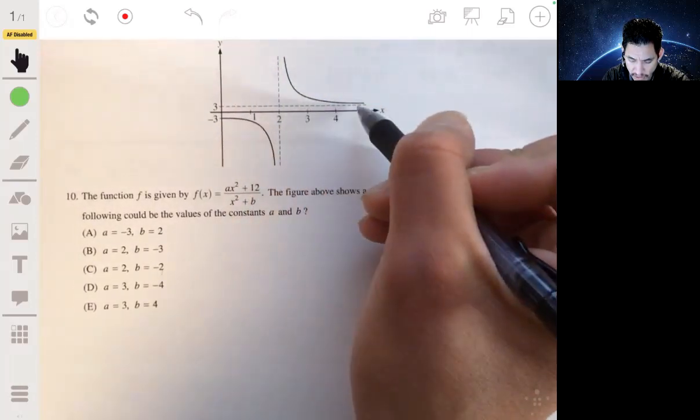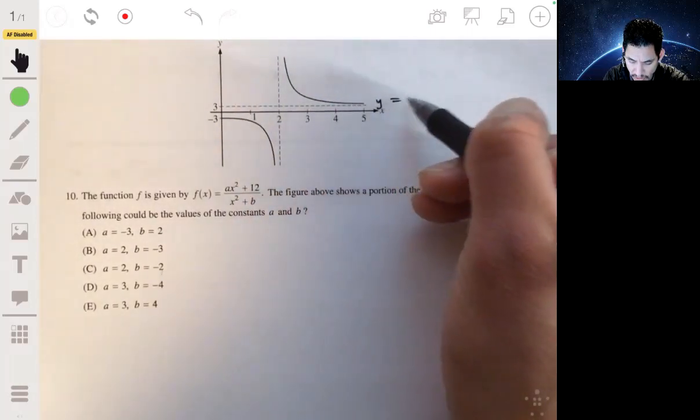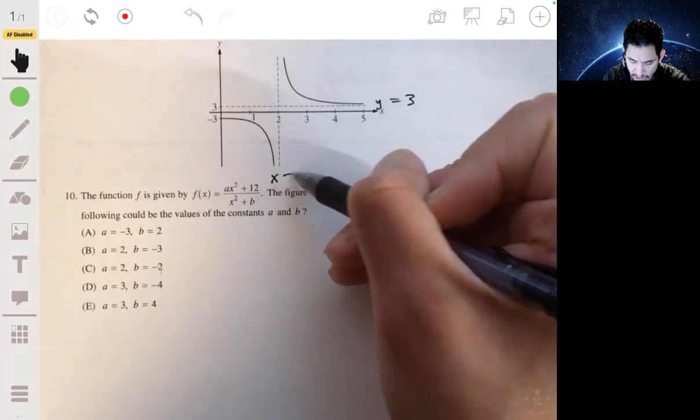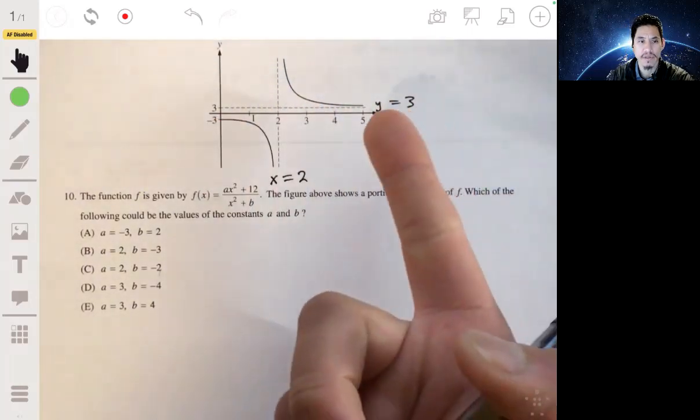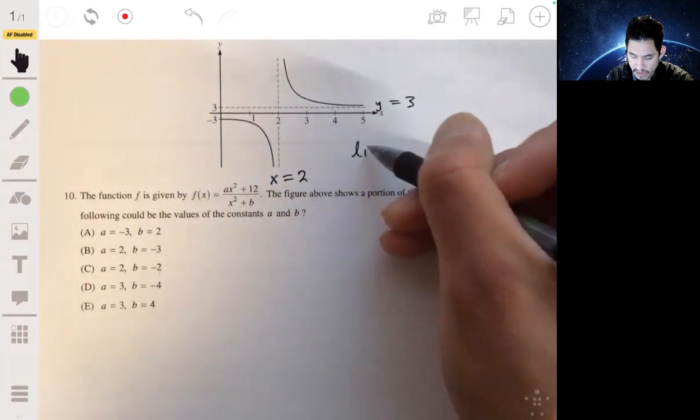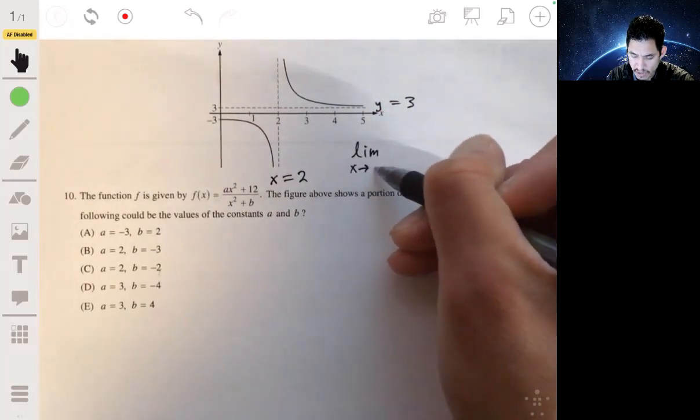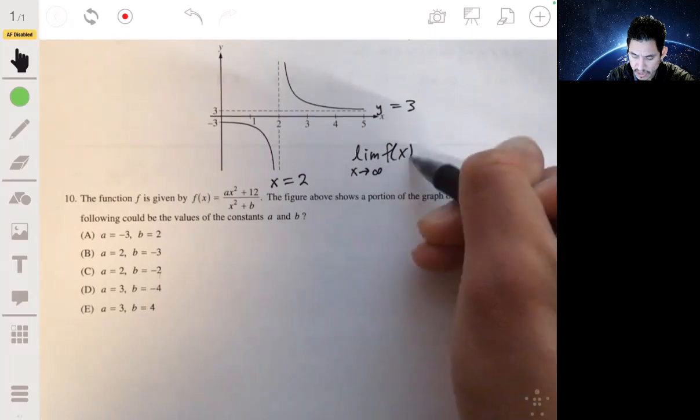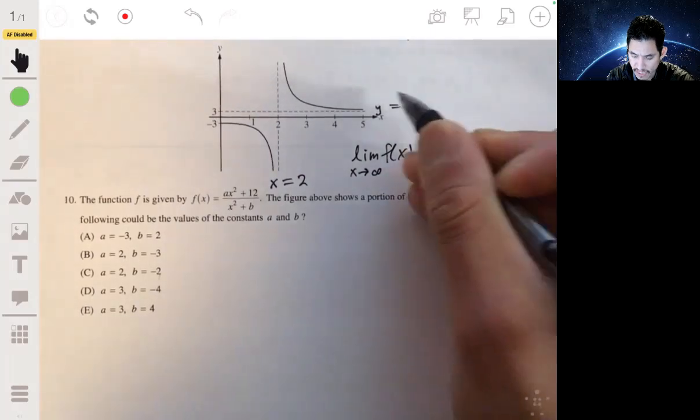Here we have an asymptote where y equals three, and here we have the asymptote x equals two. A horizontal asymptote is the limit when x approaches infinity of f(x). So we're saying as x goes to infinity, it's going to equal three.